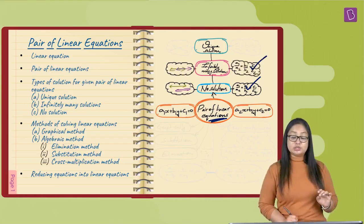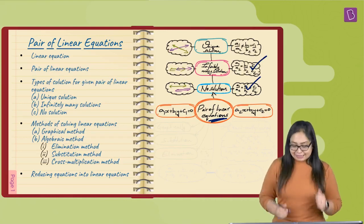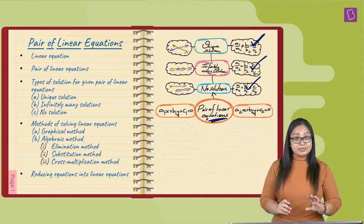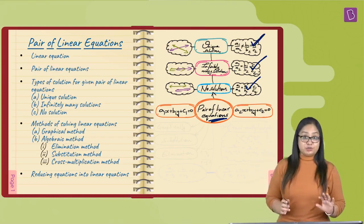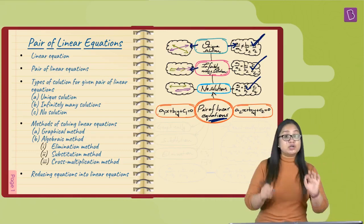And the third one is unique solution in which the lines just intersect at one point, that means this condition over here holds true. So, you write all of these key points over here and look at the arrow markings over here. Make sure the arrows are proper.